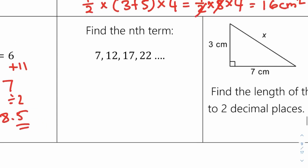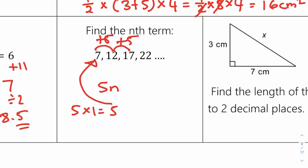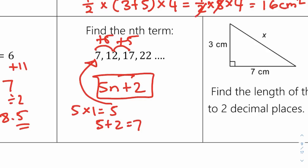Find the nth term. How much is the sequence going up by? Plus 5 each time. So it would be 5n — 5 times 1 is 5. What do I need to add to 5 to get to the first term 7? We're adding 2, so 5 plus 2 equals 7. Therefore the nth term is 5n plus 2.